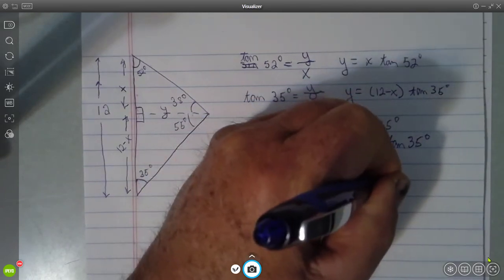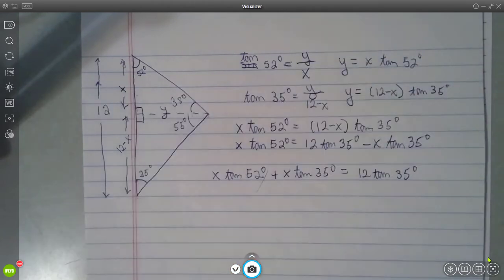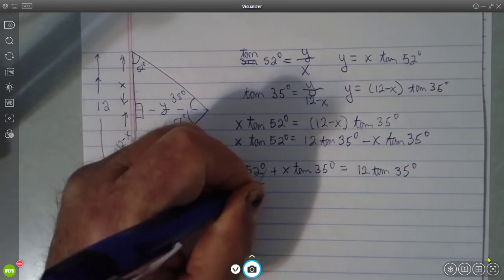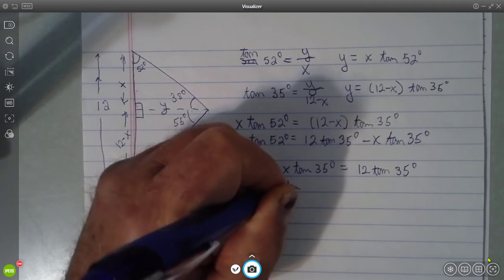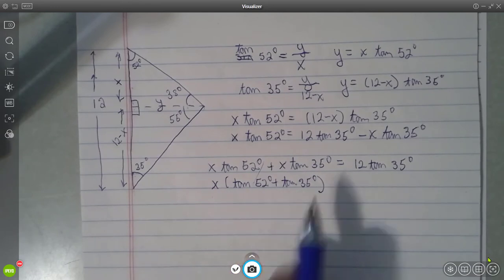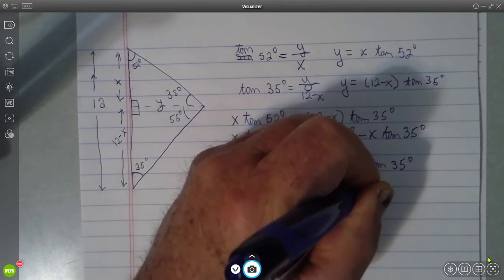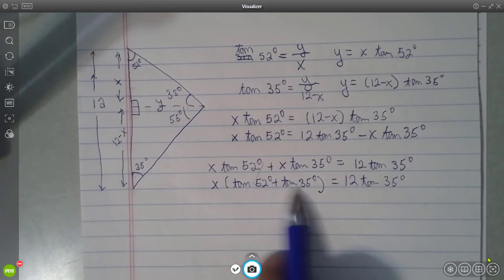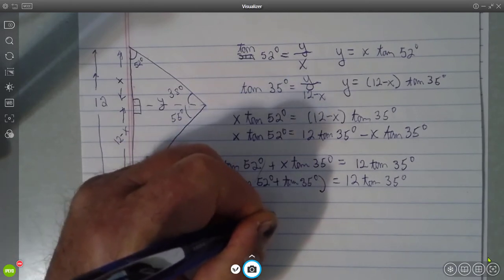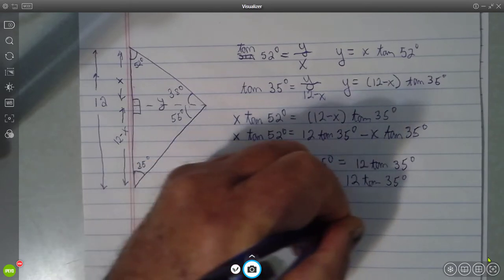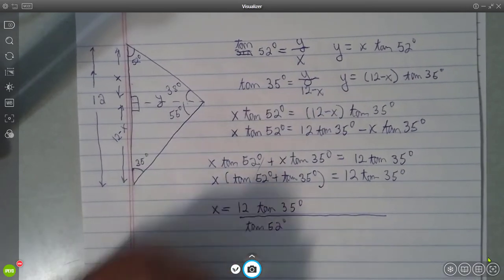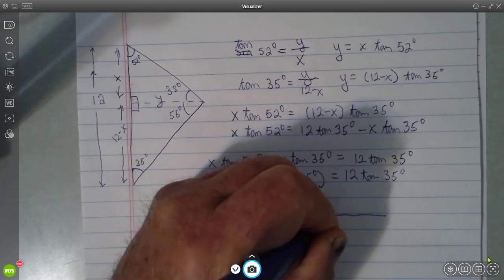All right, x is common, we can factor that off. So x times the quantity tangent 52 degrees plus tangent 35 degrees is equal to 12 times the tangent of 35 degrees. And now we can divide each side by this quantity here. x is equal to 12 tan 35 degrees over tan 52 plus tan 35 degrees.